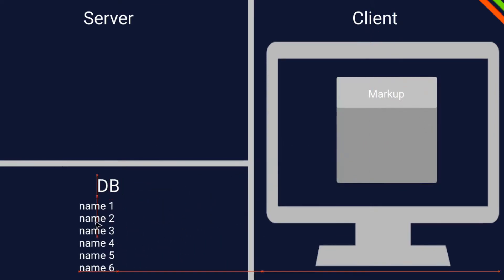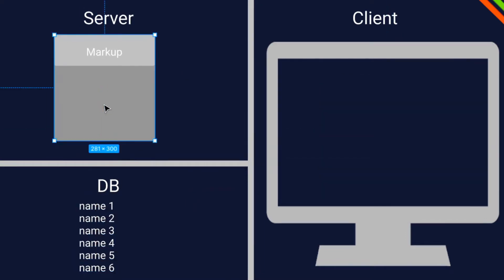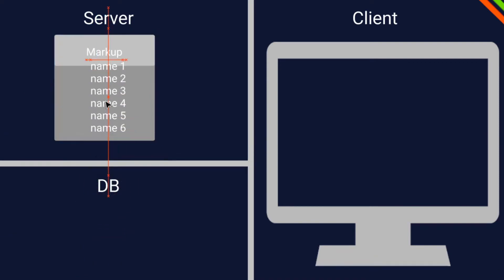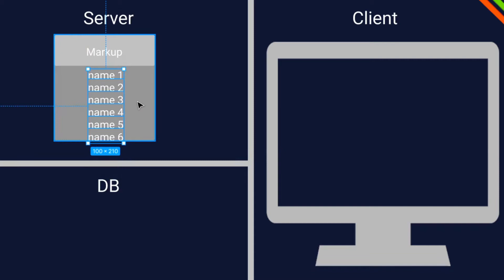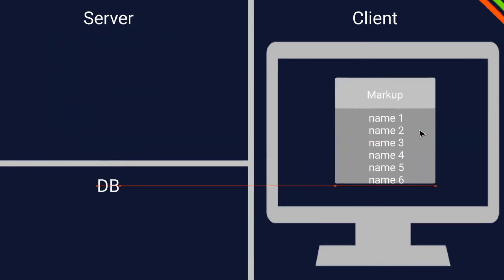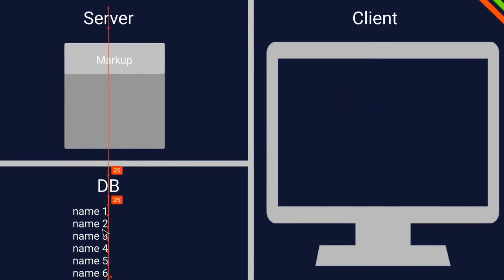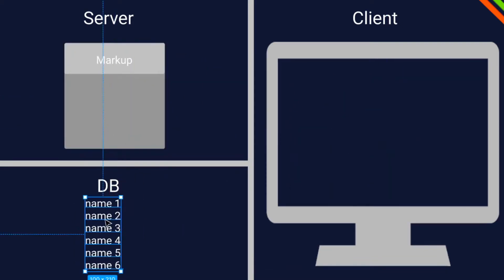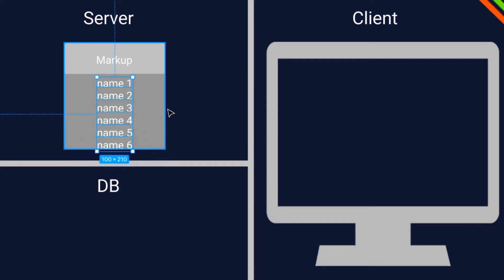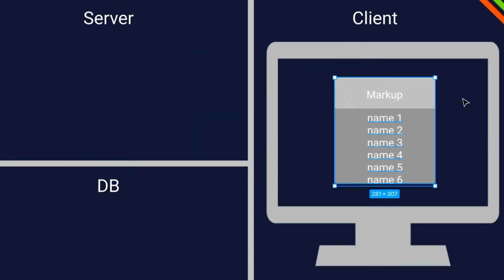The next fetching method is server-side rendering. Here on the server we have the markup, and before we actually send the markup to the client, we first fetch the data on the server. Then we send that bundle to the client. On every request that the client makes, we will do that again — fetch the data from the database and then send that bundle to the client.